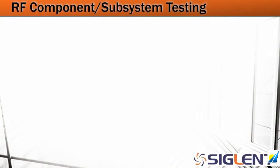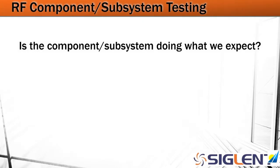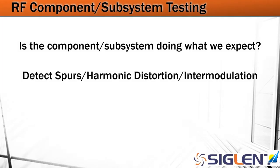The next application space is RF component and subsystem testing. Is the component or subsystem doing what we expect? If we expect an amplifier to output 10 dBm, is it actually going to do that with the given input? And is that going to work over a particular frequency range? Or is our filter working correctly? We can detect spurs, harmonic distortion, and intermodulation, because the spectrum analyzer lets us visually see exactly what's happening with respect to frequency.